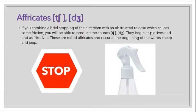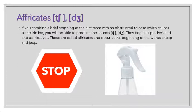Moving on to affricates. If you combine a brief stopping of the airstream with an obstructed release which causes some friction, you will be able to produce the sounds in 'chip' and 'jeep'. They begin as stops and end as fricatives. These are called affricates and occur at the beginning of the words 'cheap' and 'jeep'.